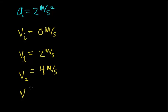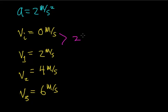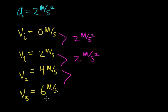After 1 more second, the velocity increases from 4 meters per second to 6 meters per second. Notice that every single second, the velocity increases by a constant amount — in this case, 2 meters per second. During each 1-second interval of time, the velocity changes by 2 meters per second per second, or 2 meters per second squared. This holds true between 1 and 2 seconds, and again between 2 and 3 seconds.